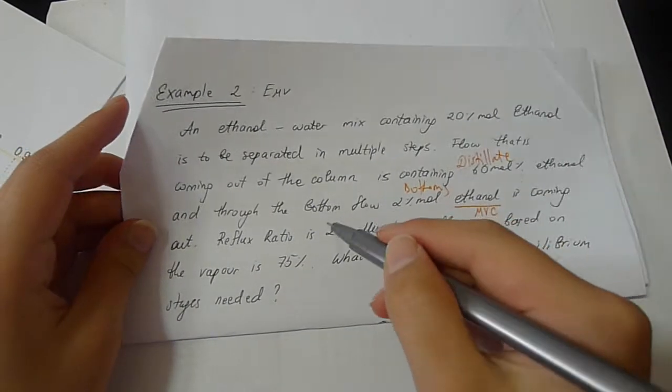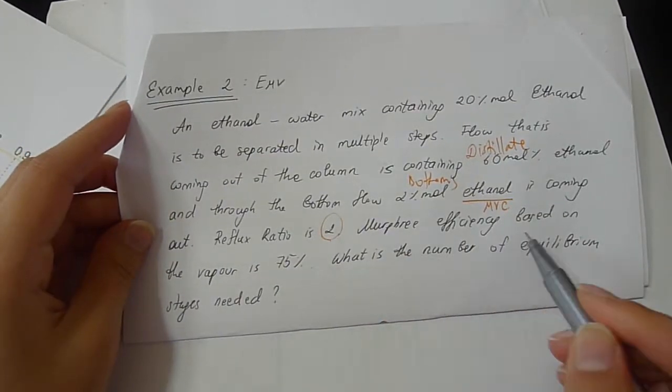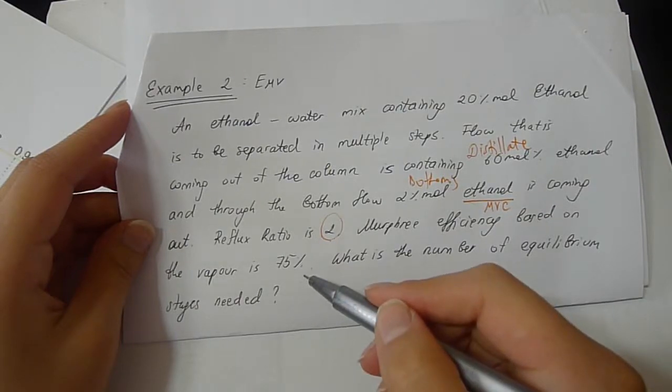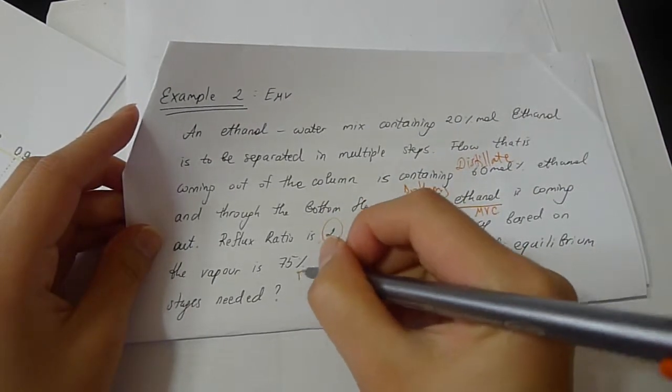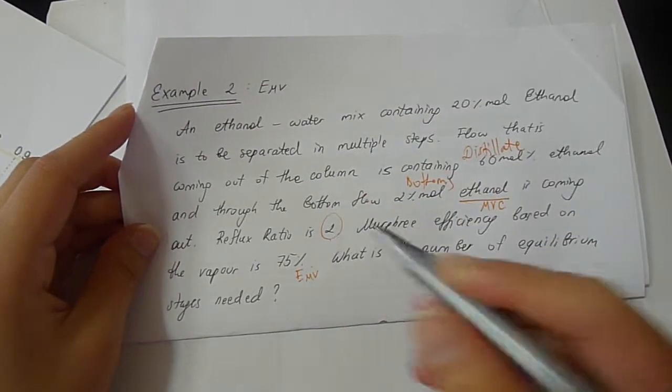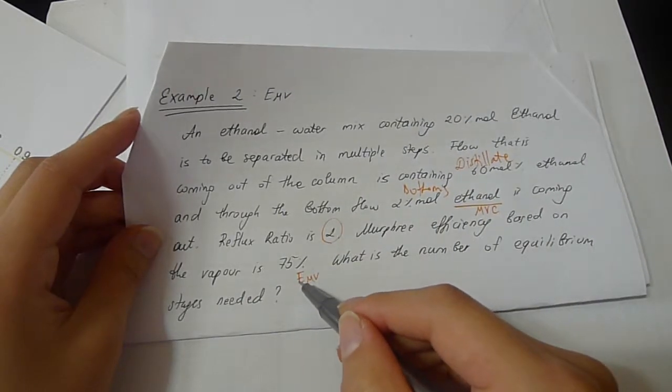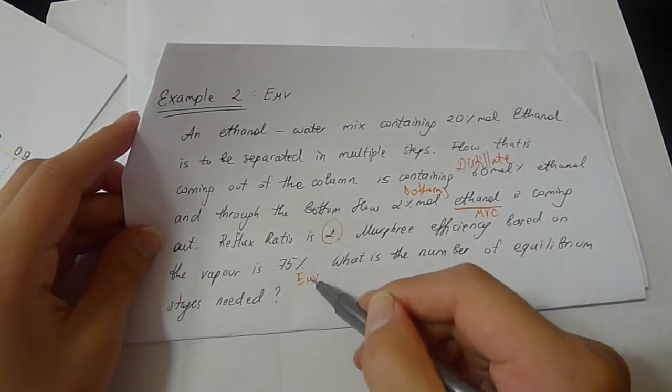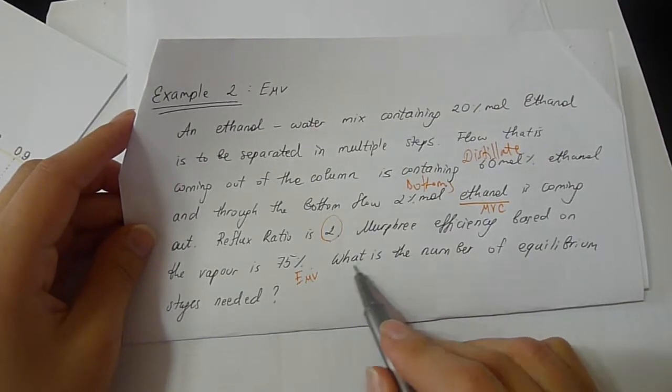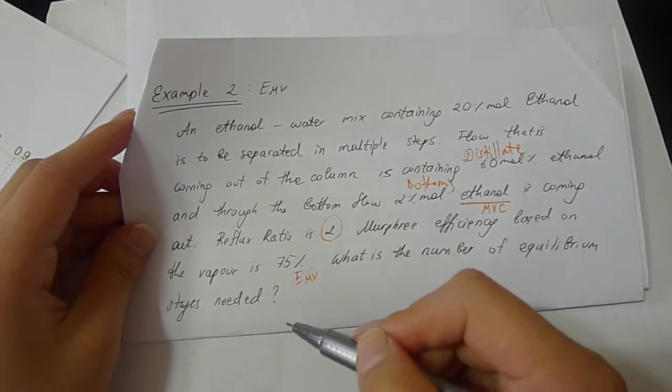Reflux ratio is 2. Murphree efficiency based on the vapor is 75%. So it's written as EMV. This means efficiency. This means Murphree. This means vapor. So the question is what is the number of equilibrium stages needed?